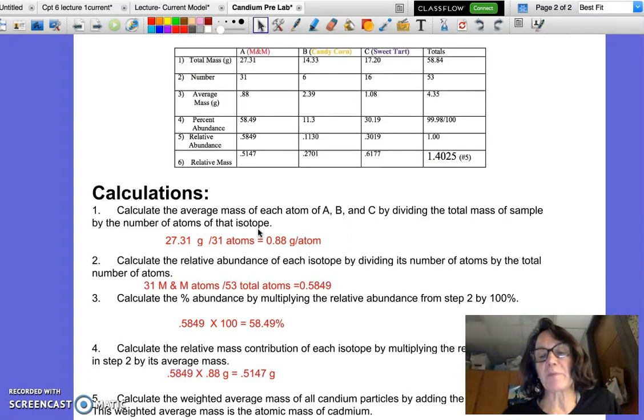We're going to divide the total mass of the sample by the number of atoms of that isotope. And putting units on there really helps me keep that straight. I had a total sample mass of M&Ms of 27.31 grams. And if there were 31 atoms of that, that means that each atom had a mass of 0.88 grams in my example. So I can go ahead and calculate the average mass for all three of my isotopes.